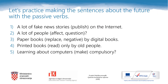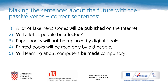Let's practice making sentences about the future with passive verbs. A lot of fake news stories use the verb 'publish'; a lot of people use the verb 'affect'; paper books — 'replace'; printed books — 'read'; learning about computers — 'make'. Here are the correct sentences: a lot of fake news stories will be published; will a lot of people be affected?; paper books will not be replaced; printed books will be read; with learning about computers being made compulsory.